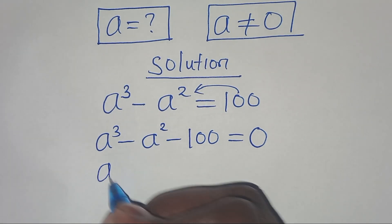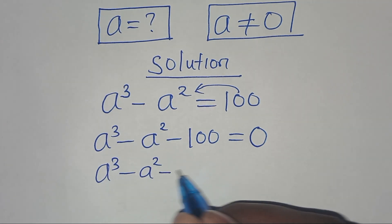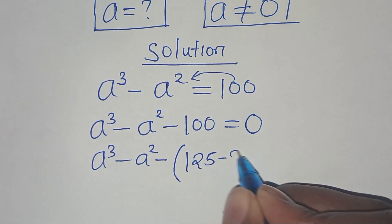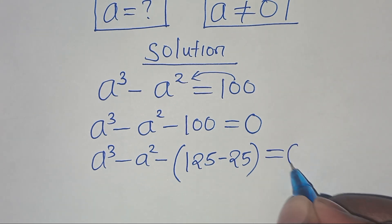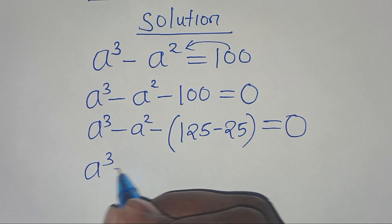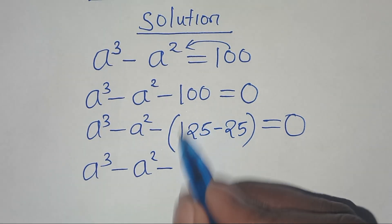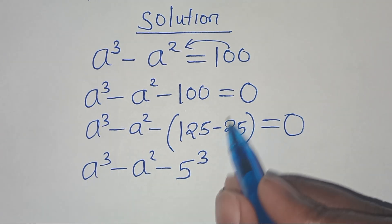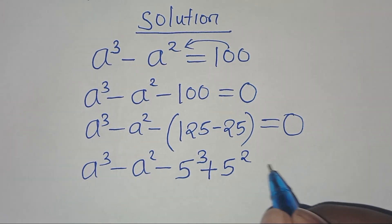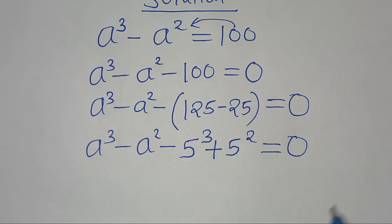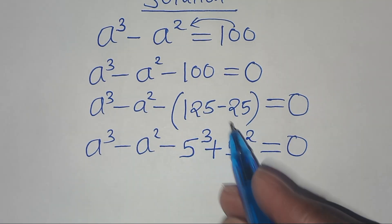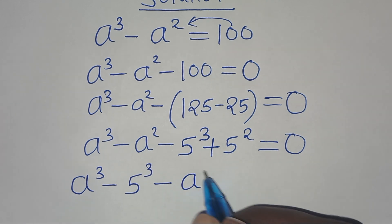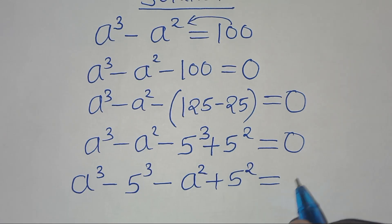So the next step again here, we have a to the power of 3, minus a to the power of 2, subtract 100, of which we can express 100 as 125. So we have a to the power of 3, minus a to the power of 2, subtract 125 — we can express 125 as 5 to the power of 3 — then we have minus times minus 25 here, which is plus 5 to the power of 2, this is equal to 0.